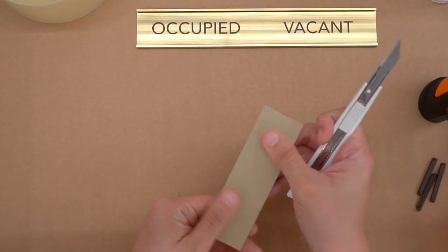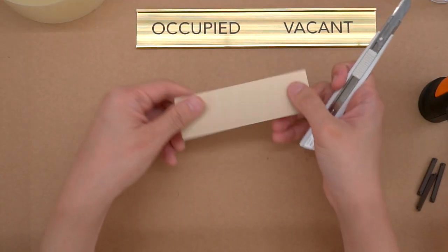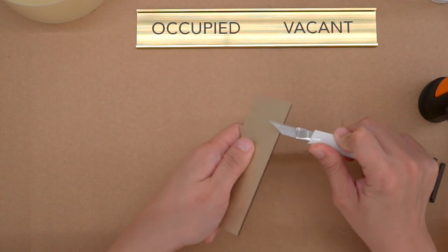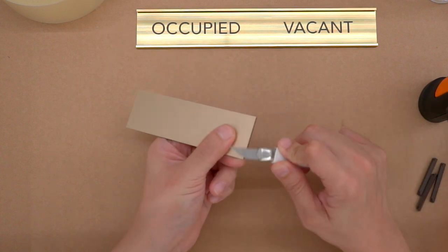After trimming the sticker to size, what I like to do is go over all the edges again with my penknife at a slight angle so that the sticker doesn't peel off that easily.